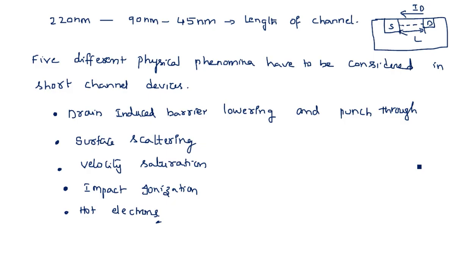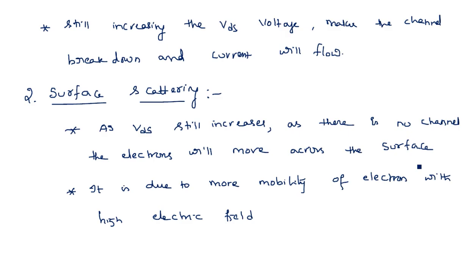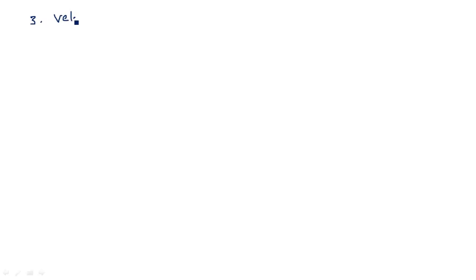Now it is time to discuss velocity saturation. There is a limitation for the velocity of electrons when we apply an electric field between drain and source — that is limited to a maximum of 10^7 centimeters per second. But when we increase the voltage across source and drain, that leads the velocity of the electrons to increase. The third effect is velocity saturation.